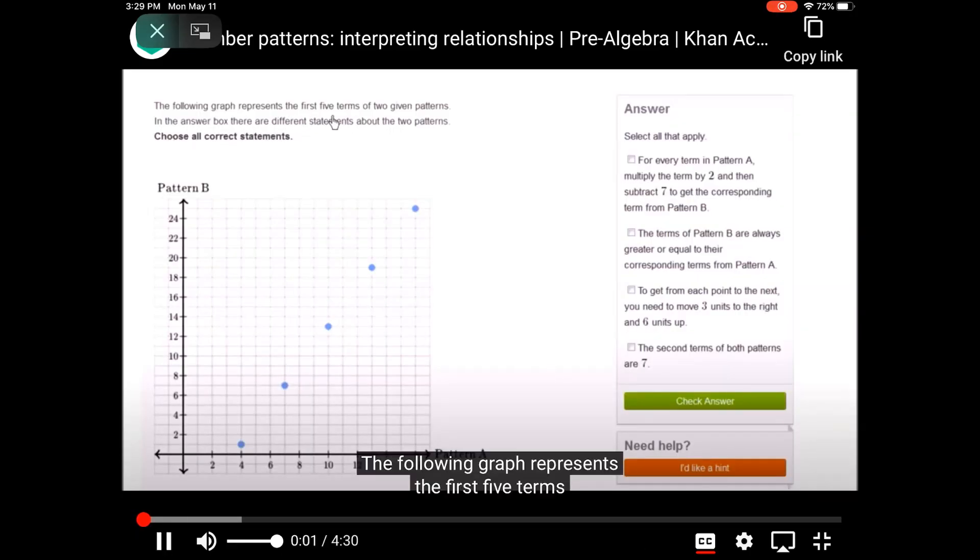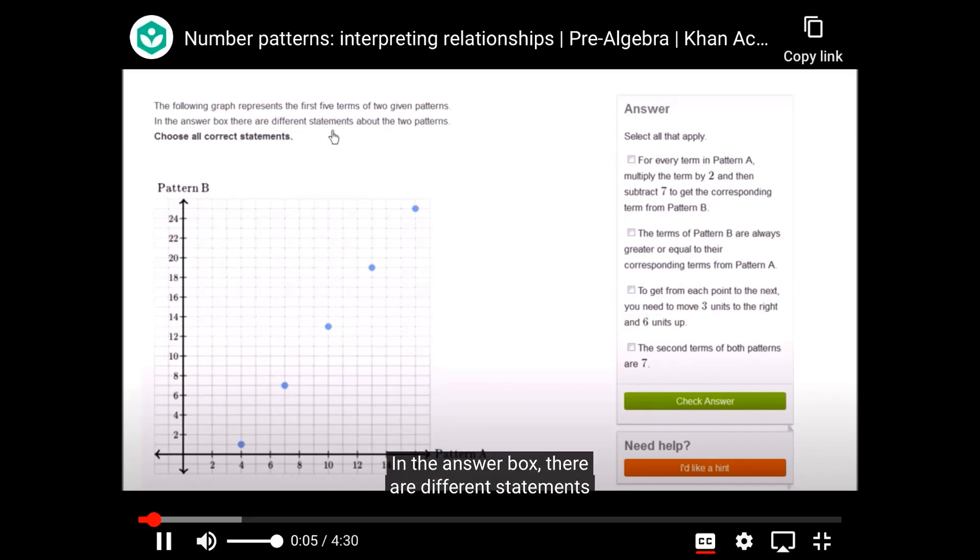The following graph represents the first five terms of two given patterns. In the answer box, there are different statements about the two patterns. Choose all correct statements. Here for each point, this point right over here, this represents its horizontal coordinate is the first term of pattern A, which is 4, and its vertical coordinate is the first term in pattern B, which is 1.